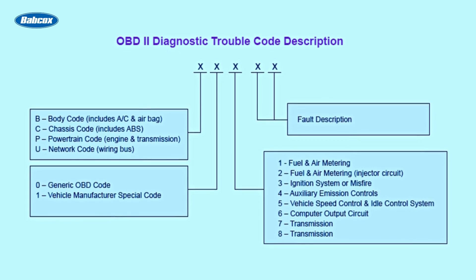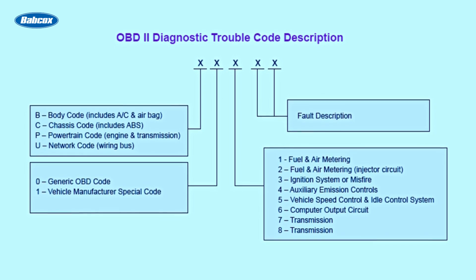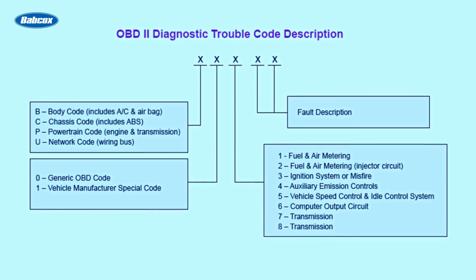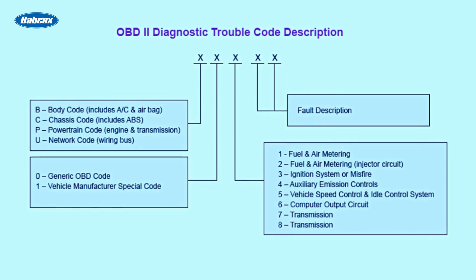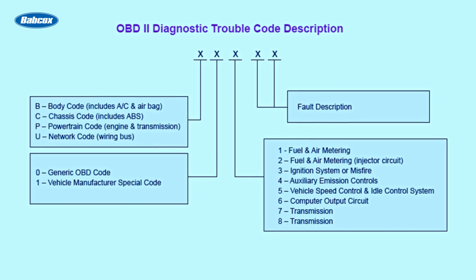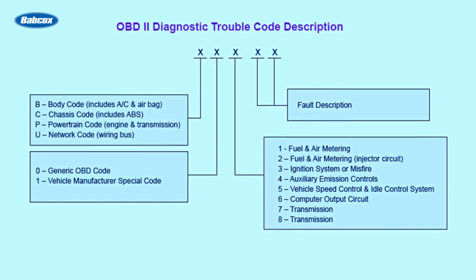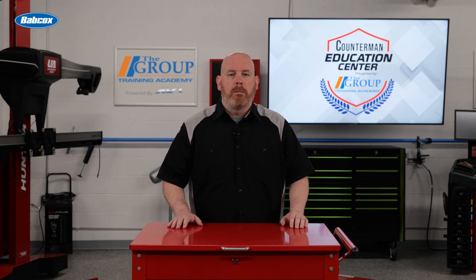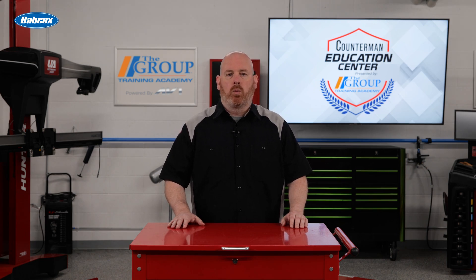Once you have the codes, you can refer to manufacturer-provided code definitions to decipher their meaning and identify the underlying issues. When a DTC is triggered, it often manifests through various symptoms and warning lights on the vehicle's dashboard.